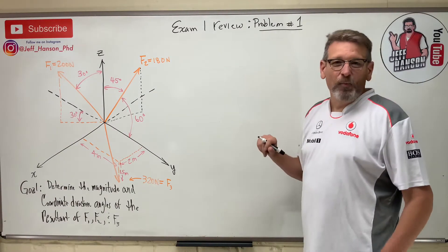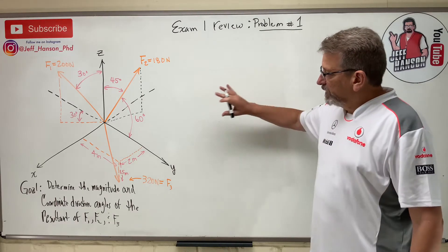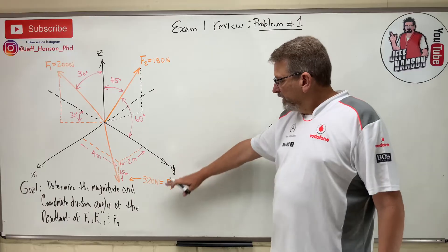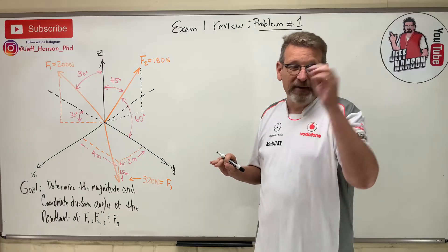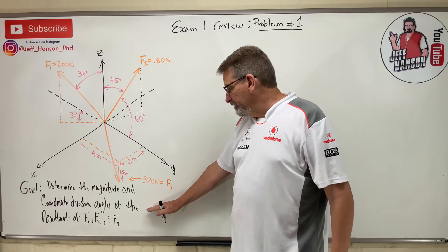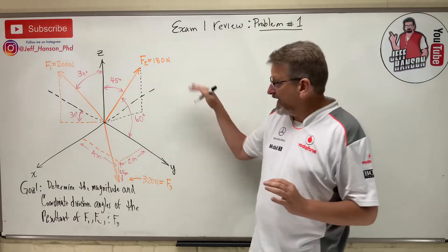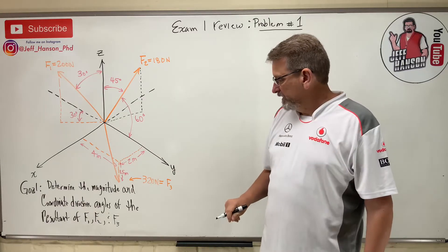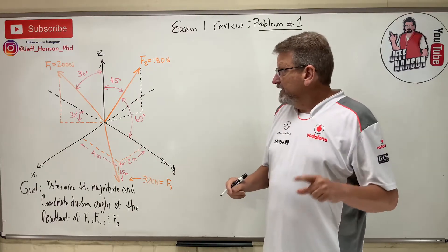Welcome back to exam one review. We're talking about adding 3D vectors and finding the resultant. The problem says: determine the magnitude and coordinate direction angles — that's alpha, beta, and gamma, or theta_x, theta_y, theta_z — of the resultant vector. So after we add the vectors together, we find the coordinate direction angles of that resultant. The direction angles go from each axis to the vector.